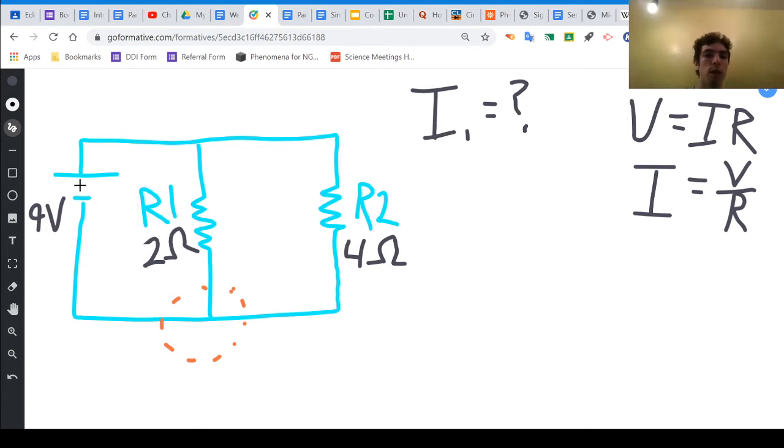So the special thing about parallel circuits, and you found this already from your Tuesday-Wednesday work, is that the voltage drops through each of the paths around this circuit should be the same. They should be equal to each other. And if our circuit looks like this, they should be equal to the voltage of this battery. And so what that means for us is that if we're looking at R1, the voltage drop for that one resistor should be 9 volts.